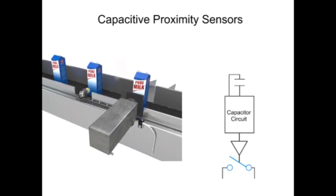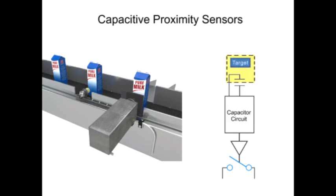Two small plates located in the front of the sensor form a capacitor. As a target enters the sensor's range, the capacitance of the two plates increases, thus causing a change in the oscillator frequency, which also activates the sensor's output, either normally open or normally closed, respectively.